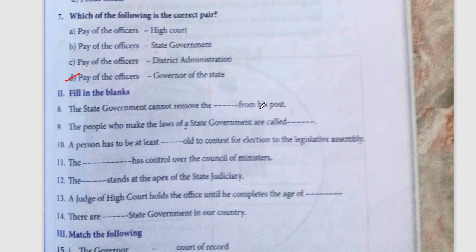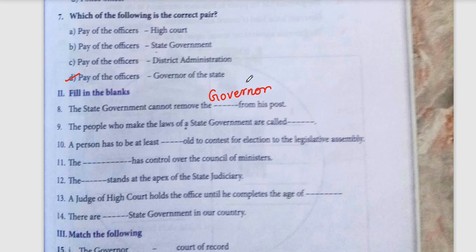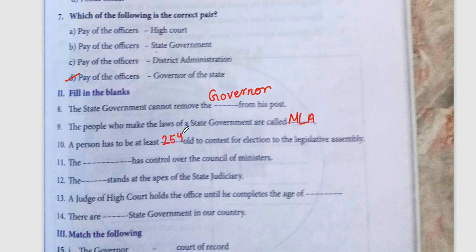Second section — fill in the blanks. The State Government cannot remove the Governor from his post. Next, the people who make the laws of the State Government are called Members of the Legislature Assembly (MLA). A person has to be at least 25 years old to contest for election in the Legislative Assembly. The Chief Minister has control over the Council of Ministers.